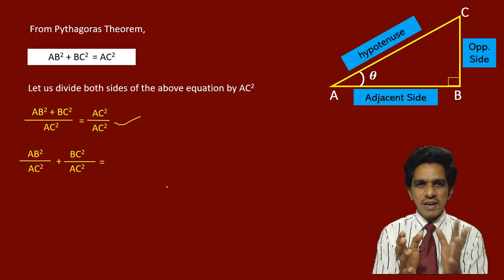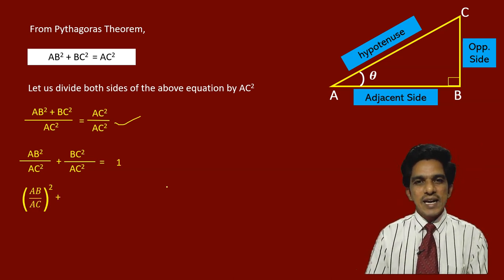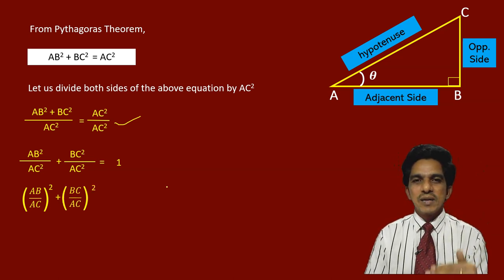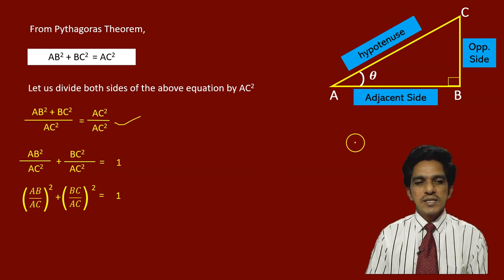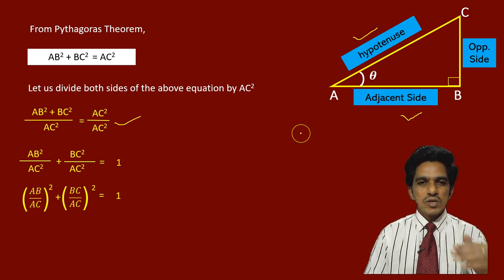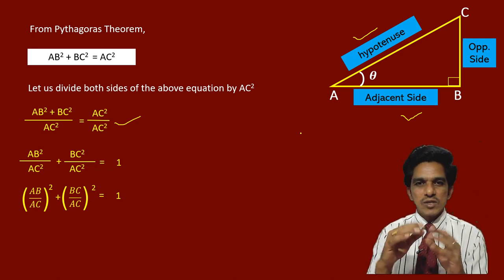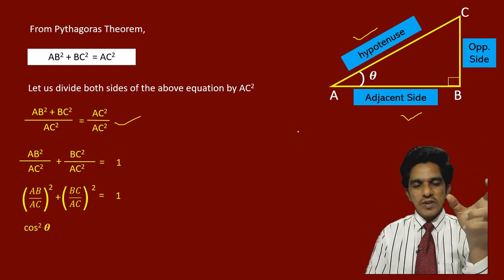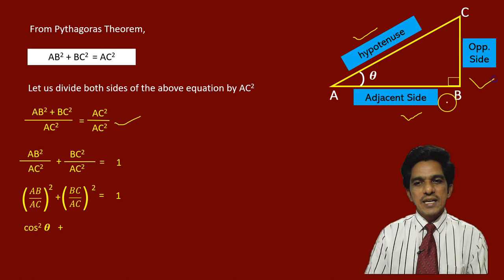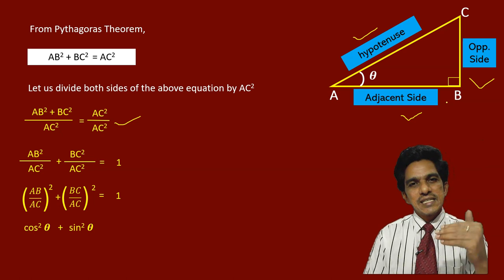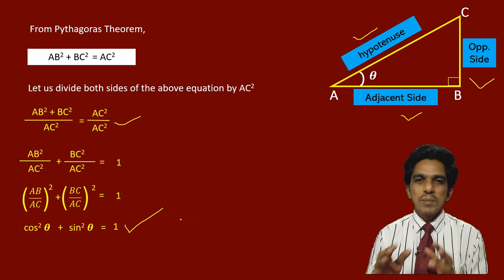We can rewrite AB²/AC² + BC²/AC² as (AB/AC)² + (BC/AC)². Now, AB/AC is adjacent by hypotenuse, which is cos θ, so the first term is cos²θ. BC/AC is opposite by hypotenuse, which is sin θ, so the second term is sin²θ. Therefore, we get our first trigonometric identity: sin²θ + cos²θ = 1.